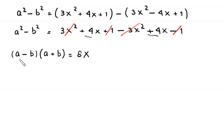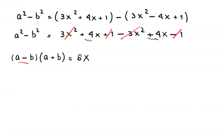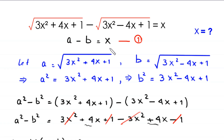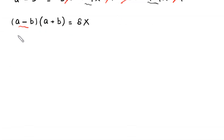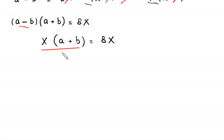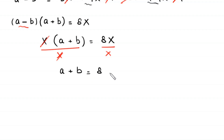Now a squared minus b squared can be factorized as a minus b times a plus b equal to 8x. In this equation we replace a minus b, since a minus b is equal to x, so this becomes x times a plus b is equal to 8 times x. From here we divide both sides by x, and we are left with a plus b is equal to 8. Let's call this equation number 2.